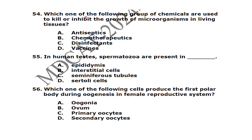Which one of the following groups of chemicals are used to kill or inhibit microorganisms in living tissue? These are antiseptics or chemotherapeutic agents — the key distinction is that antibiotics work within living tissue specifically.